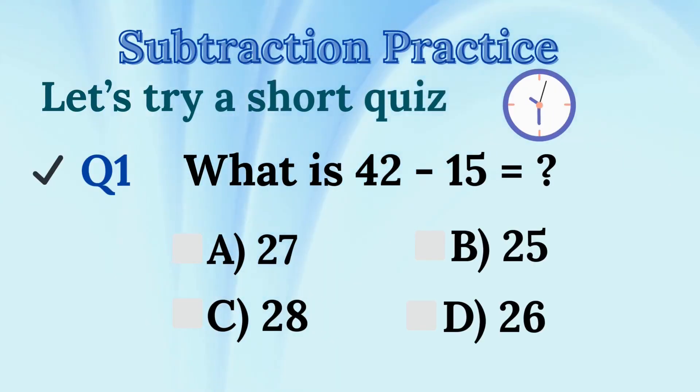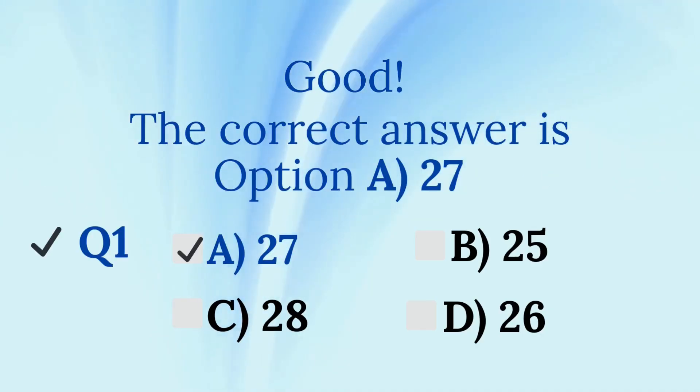Subtraction practice. Now, let's try a short quiz. Question 1. What is 42 minus 15 equals? Is it option A, 27, option B, 25, option C, 28, or option D, 26? Think carefully and choose the correct answer A, B, C, or D. Good. The correct answer is option A, 27.